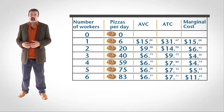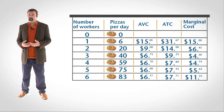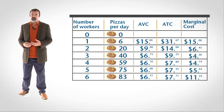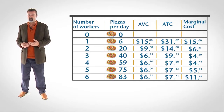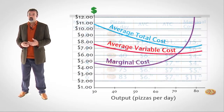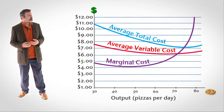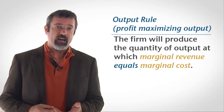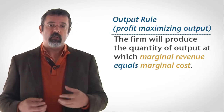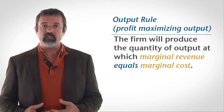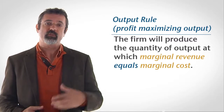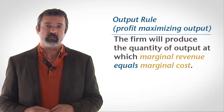Based on its output function and the prices of variable and fixed factors, we have already calculated our pizzeria's average and marginal cost curves. Graphing these figures produces a picture like this. In an earlier video, we learned the output rule for profit maximization: the firm should produce the quantity of output at which marginal revenue equals marginal cost.